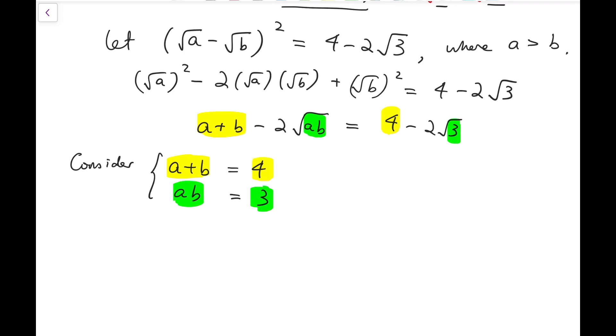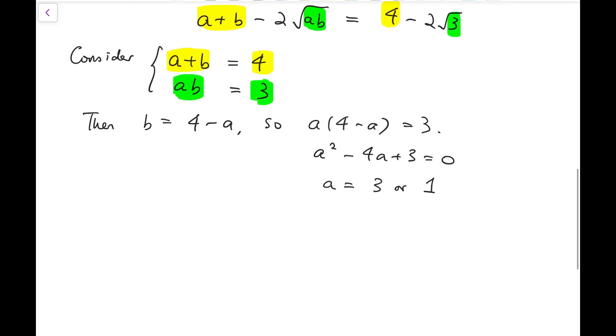And then I'll just consider this system instead. Now from this, we can quickly solve it. Because we are simply solving quadratic equations. So now a equals 3 or 1, either 3 or 1.